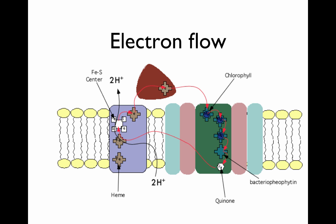Let's talk about electron flow. The light in the reaction center energizes the electron, which transfers to a quinone. This quinone then goes into the quinone pool, is released into the pool, and travels to the electron transport system. It is donated to a number of different electron carriers, eventually back to a cytochrome, and then back to the reaction center. In the process of going through these electron carriers, protons get pumped across the membrane.